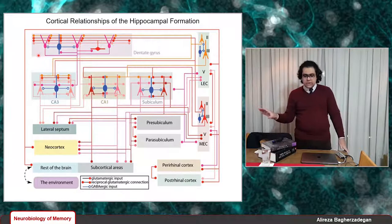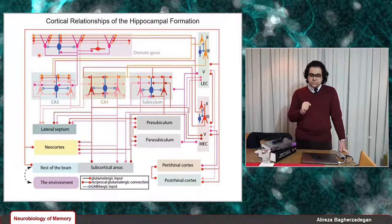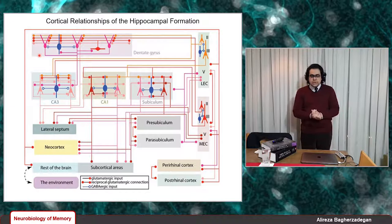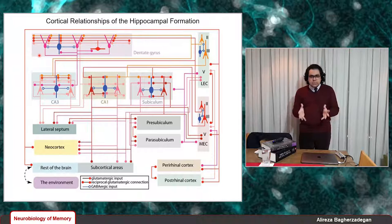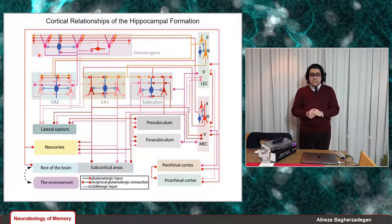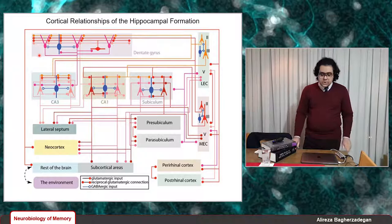Before starting this lecture, I should mention that this is just a very basic introductory lecture on hippocampal microcircuits. There is a book published by Springer with the same title — Hippocampal Microcircuits — and that book has over 800 pages, which are just summaries of research projects done by hundreds of scientists. In this lecture, I'm going to focus primarily on CA1 and CA3 microcircuits.